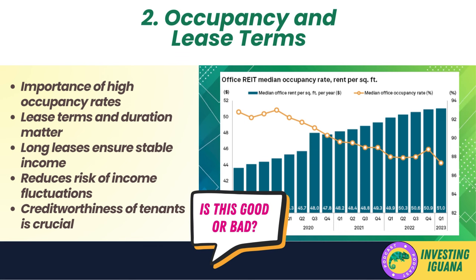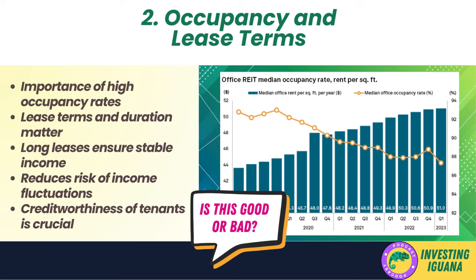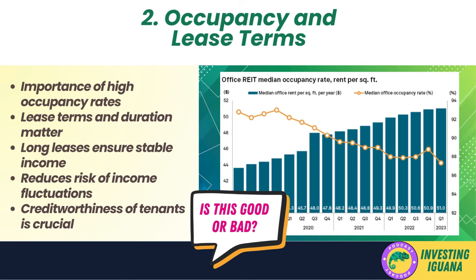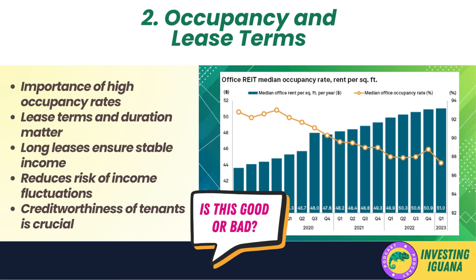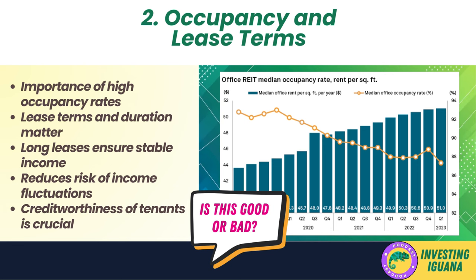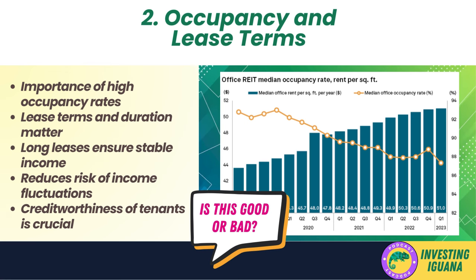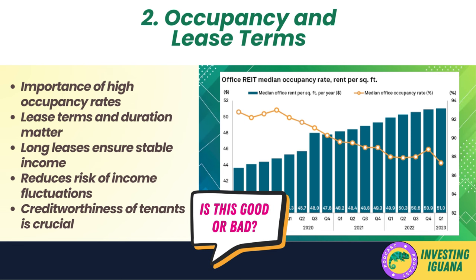Next, you want to look at the occupancy rates of the REIT's properties. Occupancy rates refer to the proportion of rented or used space compared to total available space. High occupancy rates are generally a positive indicator, suggesting strong demand for the properties. A high occupancy rate means a large percentage of properties are being rented out, generating income for the REIT. However, the terms and duration of the leases are equally important — these contracts stipulate the duration of the lease and the amount of rent to be paid.